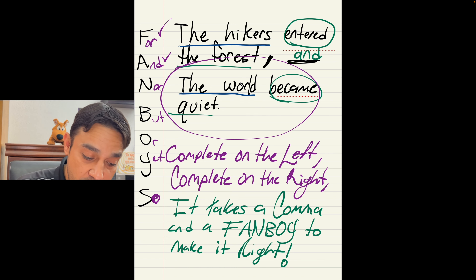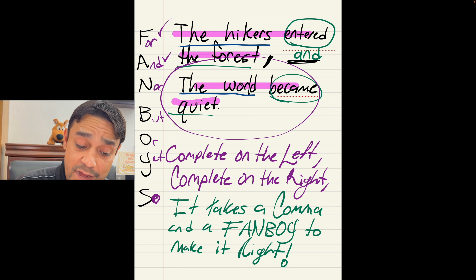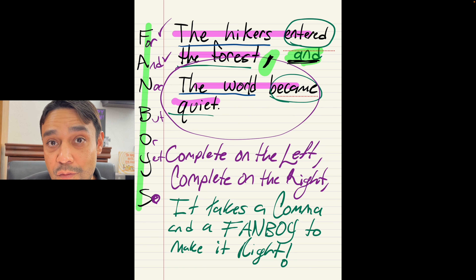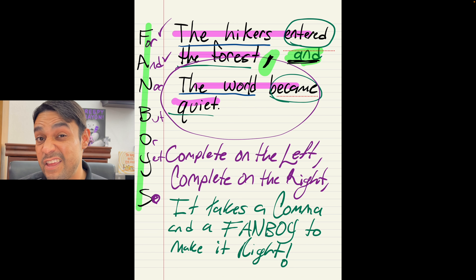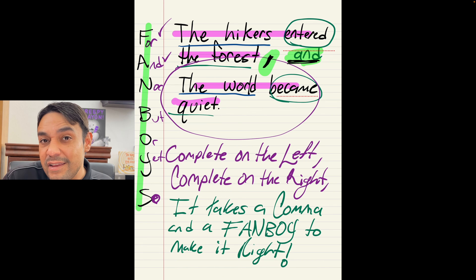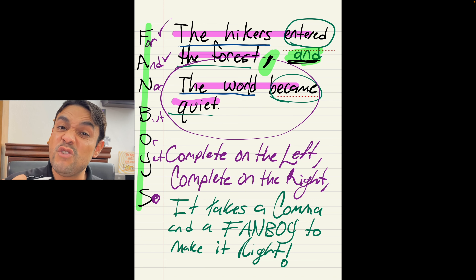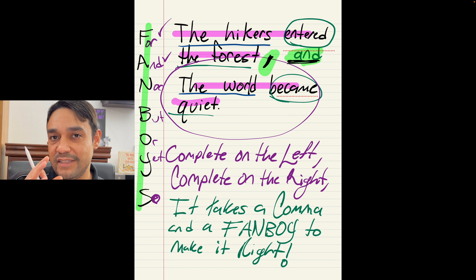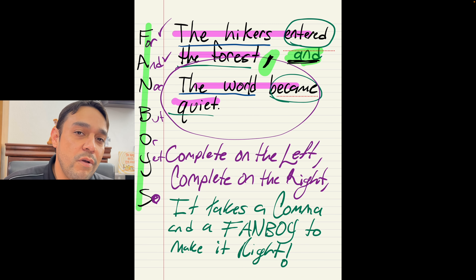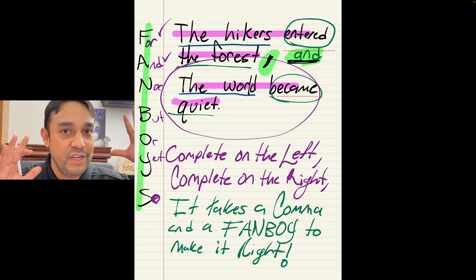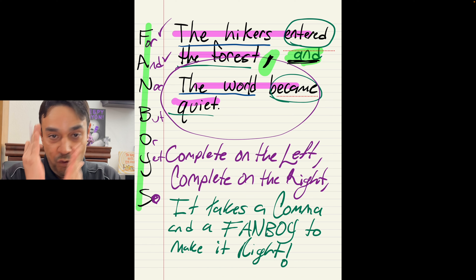So just remember your song: complete on the left, complete on the right, it takes a comma and a fanboy to make it right. There's our compound sentence. Once we check that both of them are complete, we can add a comma and a conjunction to join them into a compound sentence. Why would we want to do that? It makes us sound a lot more fluid and gives more meaning to the overall idea. If we only spoke in simple sentences, we'd sound very simple. We want to be telling whole, concise stories and contributing to bigger ideas.